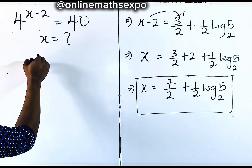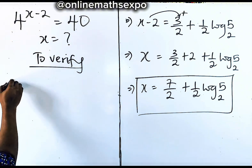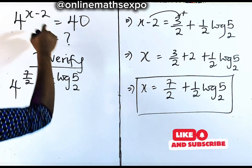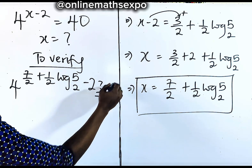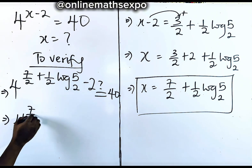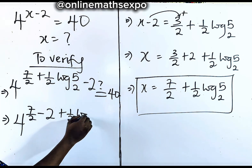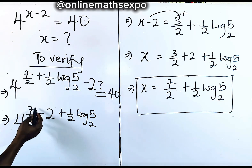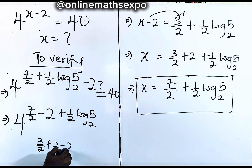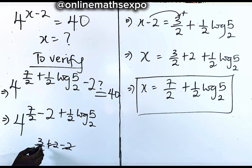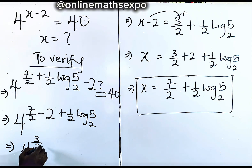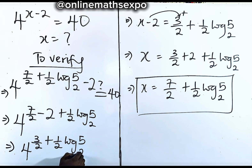Let's verify together. We have 4 raised to the power of (7/2 + (1/2)log₂5 minus 2). Now 7/2 minus 2 equals 3/2, so this simplifies to 4 raised to the power of 3/2 plus (1/2)log₂5.